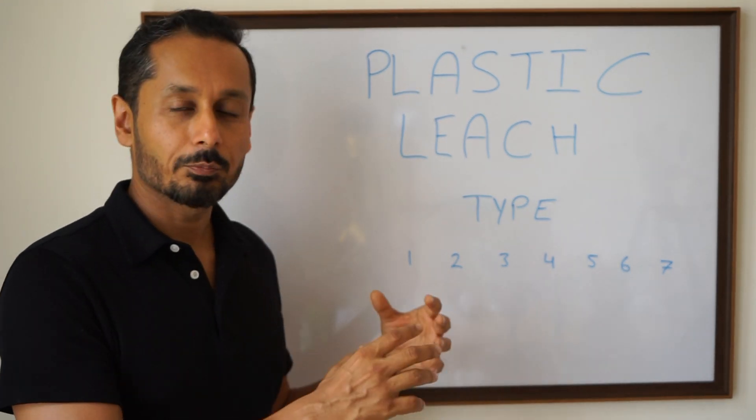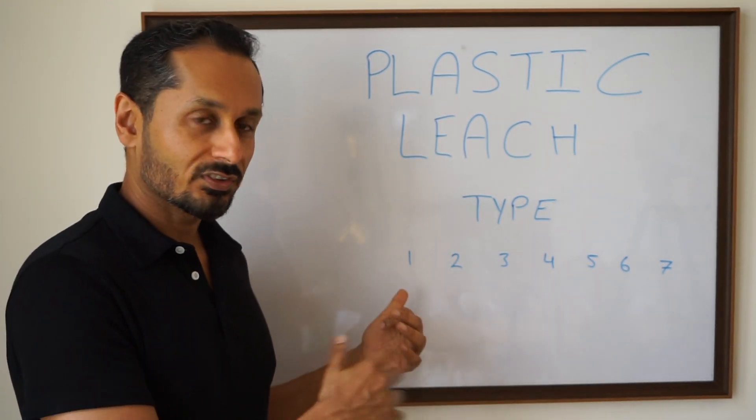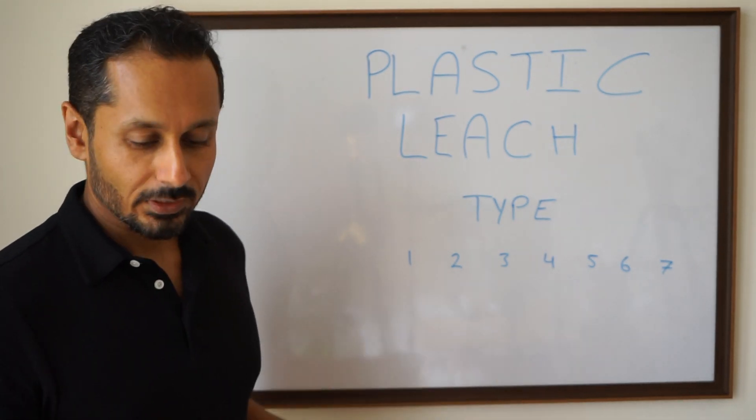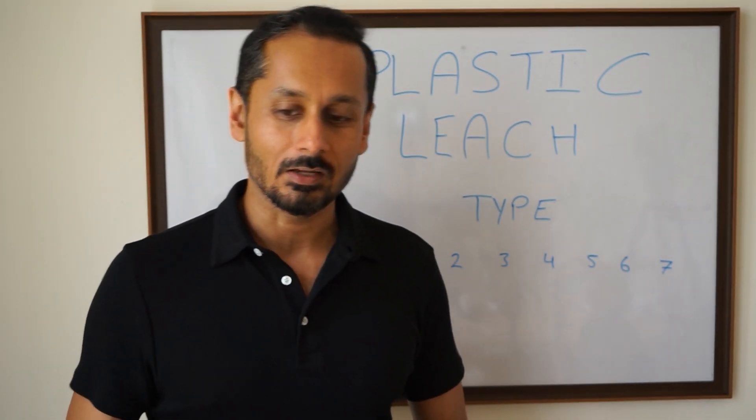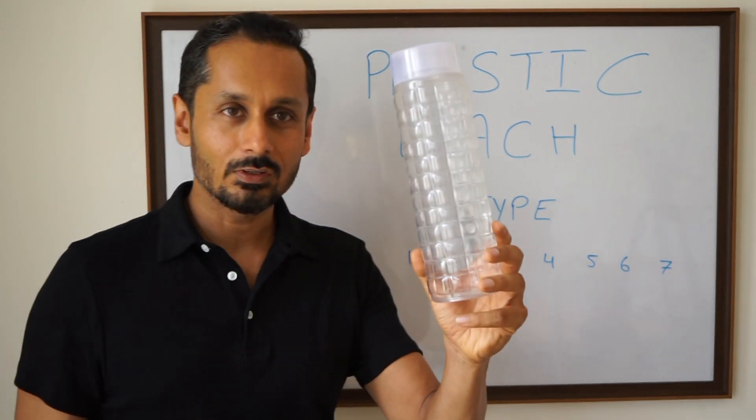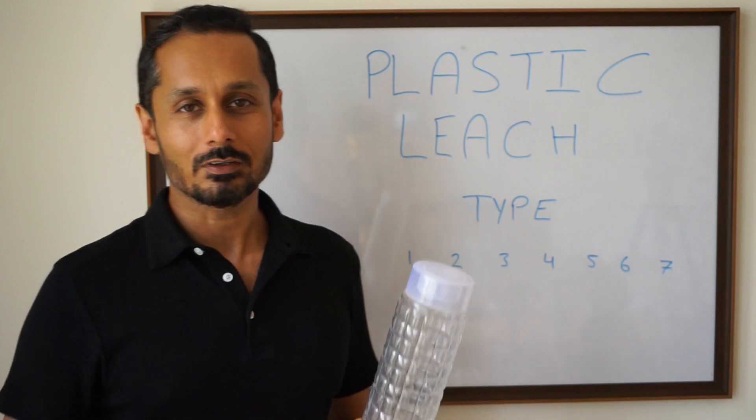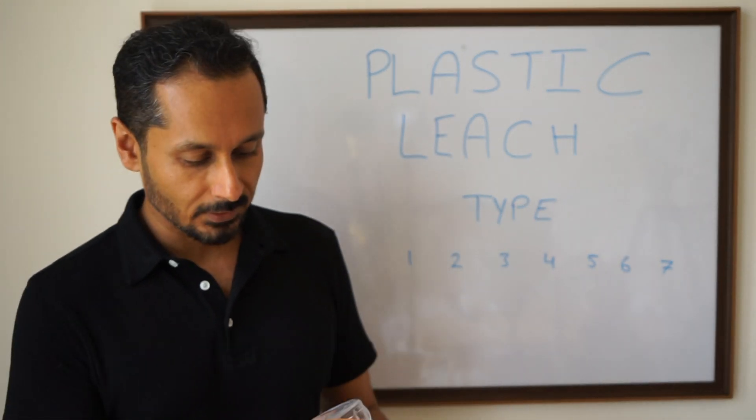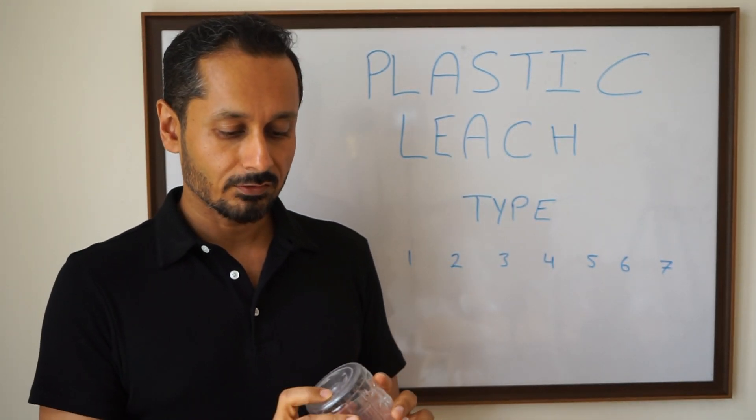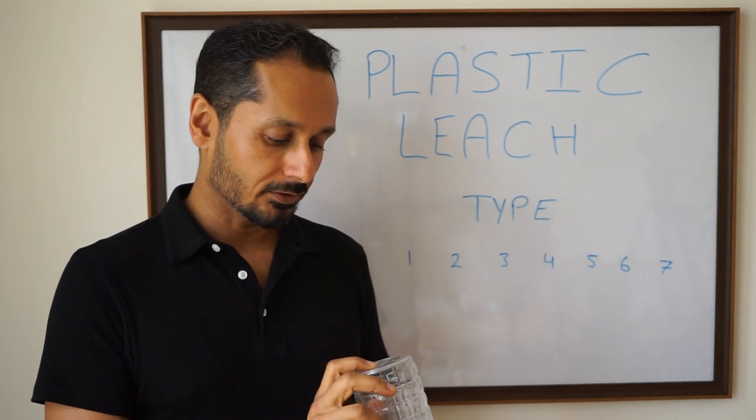So that would be like your Bisleri water bottle or stuff like that. So guess what else is plastic number one? Do you have one of these in your home or do you have these in your home? I was shocked after that conversation to read that all of these are category one.